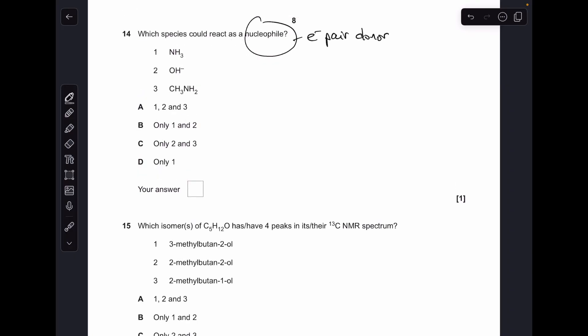Number 14. A nucleophile is an electron-pair donor. So which of these species can do that? So one can, ammonia can, because there's a lone pair on the nitrogen. OH-minus ions can as well because there's lone pairs around the oxygen. And for three, same reason as one, we've got a nitrogen in methyl amine. So all three of them can act as nucleophiles. So A.